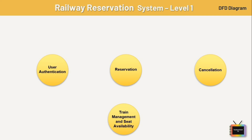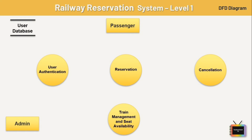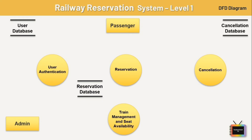Here I am taking two entities. First is passenger — it basically initiates the reservation process by providing necessary details. Next we have admin — it manages the system including adding, removing, and updating train schedules, etc. We also have four databases. First is user database — it contains user account information like usernames, passwords, and booking history. Next is reservation database — it stores information about current reservations including passenger details.